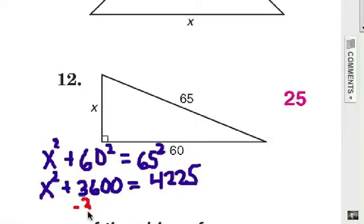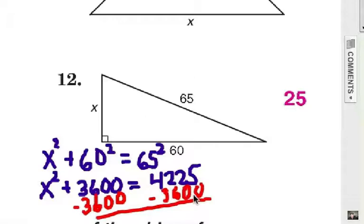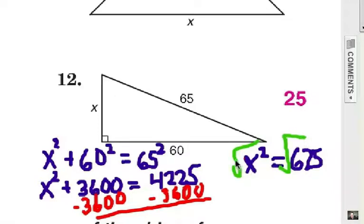That will give us 625. Take the square root of each side. And now of course our answer would be 25.